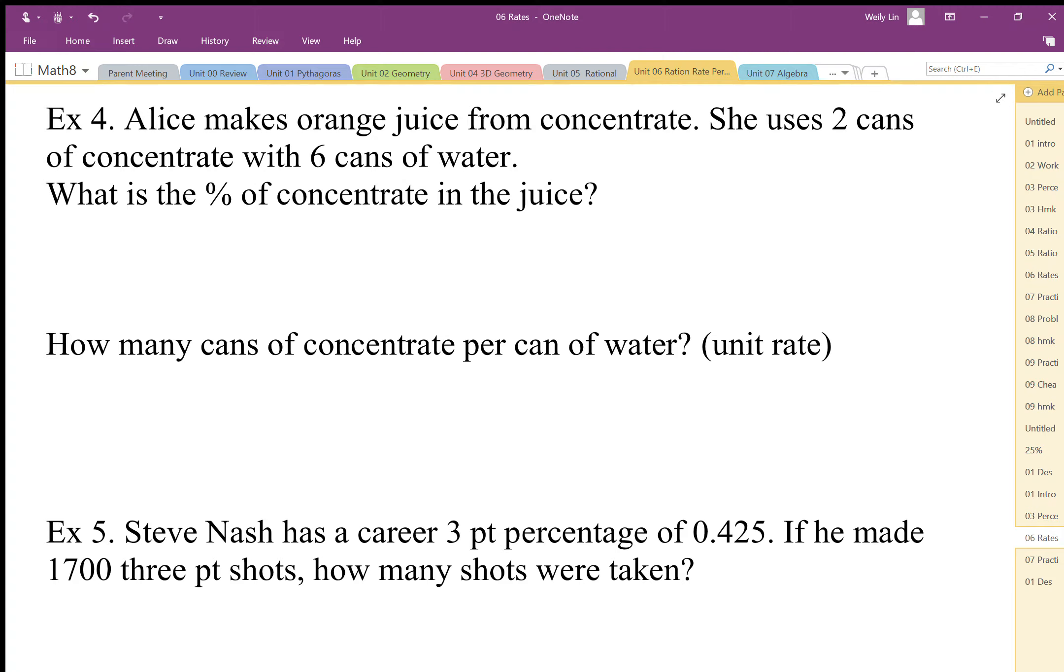Alice makes orange juice from concentrate. She has some concentrated orange juice and she's going to mix water in to end up with unconcentrated orange juice. She uses two cans of concentrate to six cans of water.